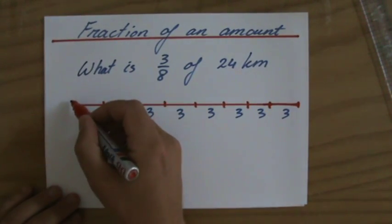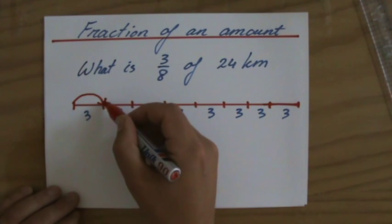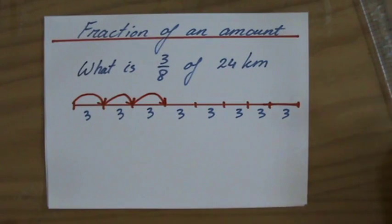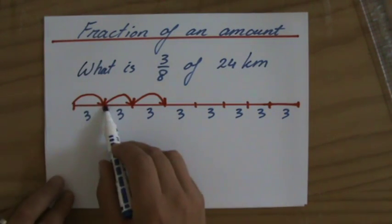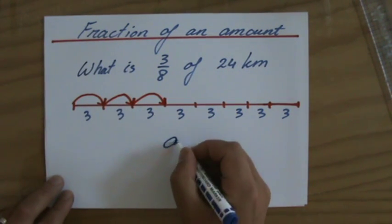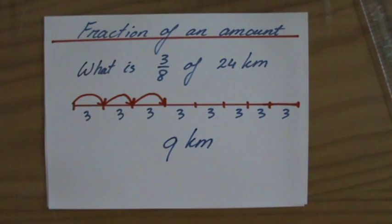So I run over here, I run again, and I run again. I only run 3 of those parts. How many kilometers did I run? Well, that's 3 kilometers each, so in total the answer is 9 kilometers, a fraction of an amount.